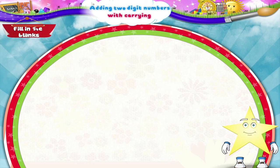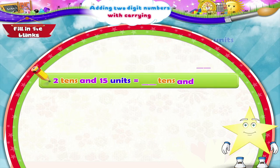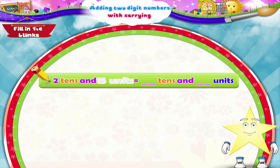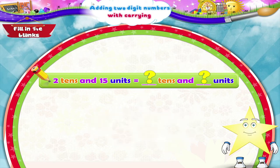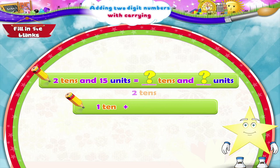Let us solve some examples now. Here is the first question: two tens and fifteen units is equal to how many tens and how many units? Yes, Starry, first we will split fifteen units into one ten and five units. Then we shall add one ten to two tens. So we get the answer as three tens and five units.